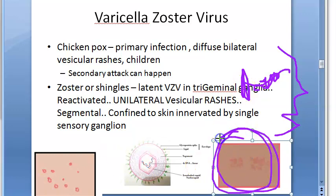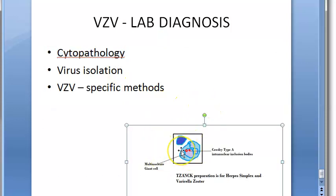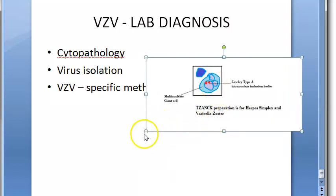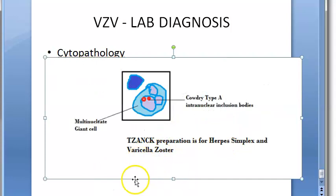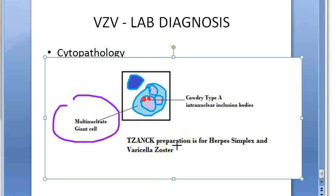Reactivation causes zoster or shingles. For lab diagnosis, you can do cytopathology: use Giemsa stain on scrapings from the ulcer base and do a Tzanck smear. This reveals cytopathological changes similar to HSV infection, such as formation of multinucleate giant cells. Here you can see the Tzanck preparation — similar for herpes simplex and varicella zoster. You can see a multinucleate giant cell and Cowdry type A intranuclear inclusion bodies.